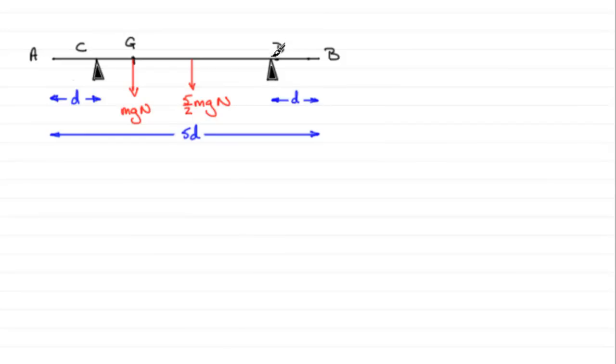Now because we've moved this from the end here to the middle, what's going to happen is the beam here, the rod I should say, is not going to tilt anymore about C.